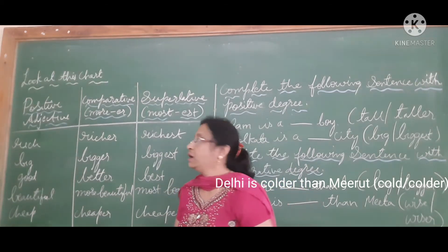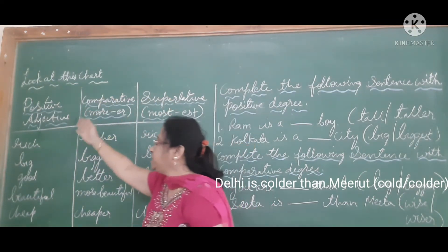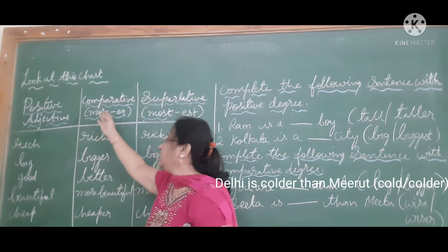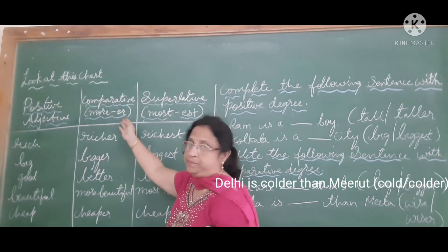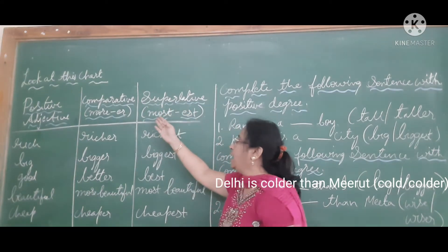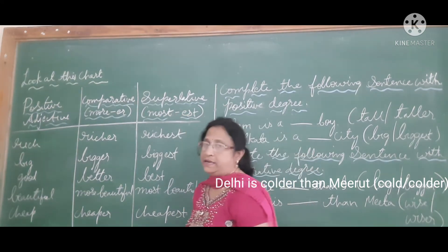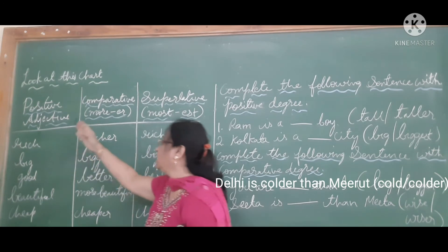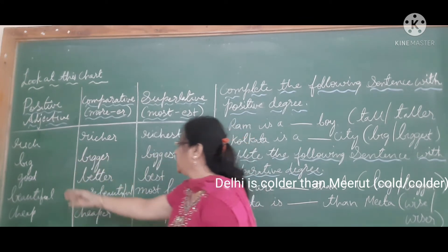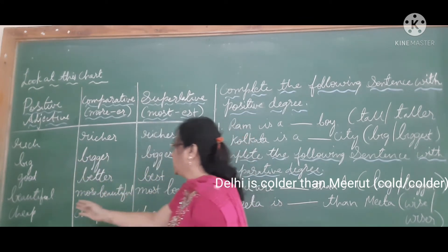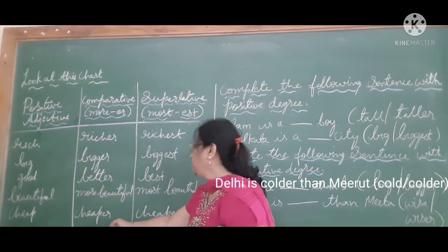Let us learn through a chart. In positive degree, we are not comparing with any other. In comparative degree, we add words like 'more' or '-er'. In superlative degree, we add words like 'most' or '-est'. Examples: rich, richer, richest. Big, bigger, biggest. Good, better, best. Beautiful, more beautiful, most beautiful. Cheap, cheaper, cheapest.